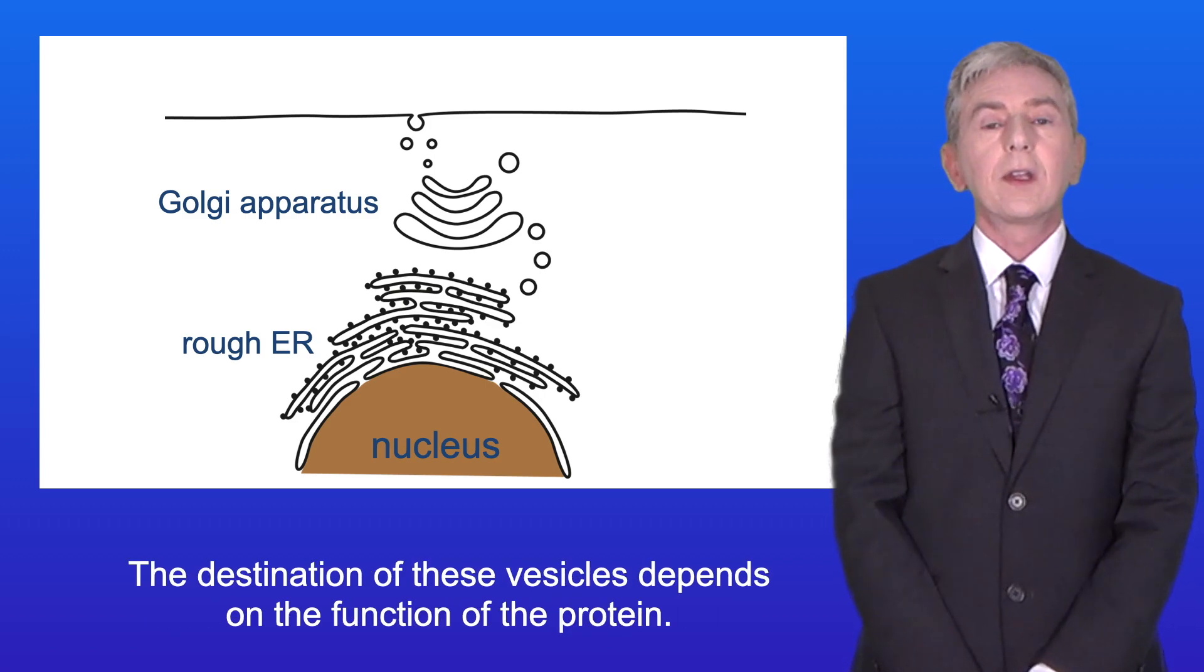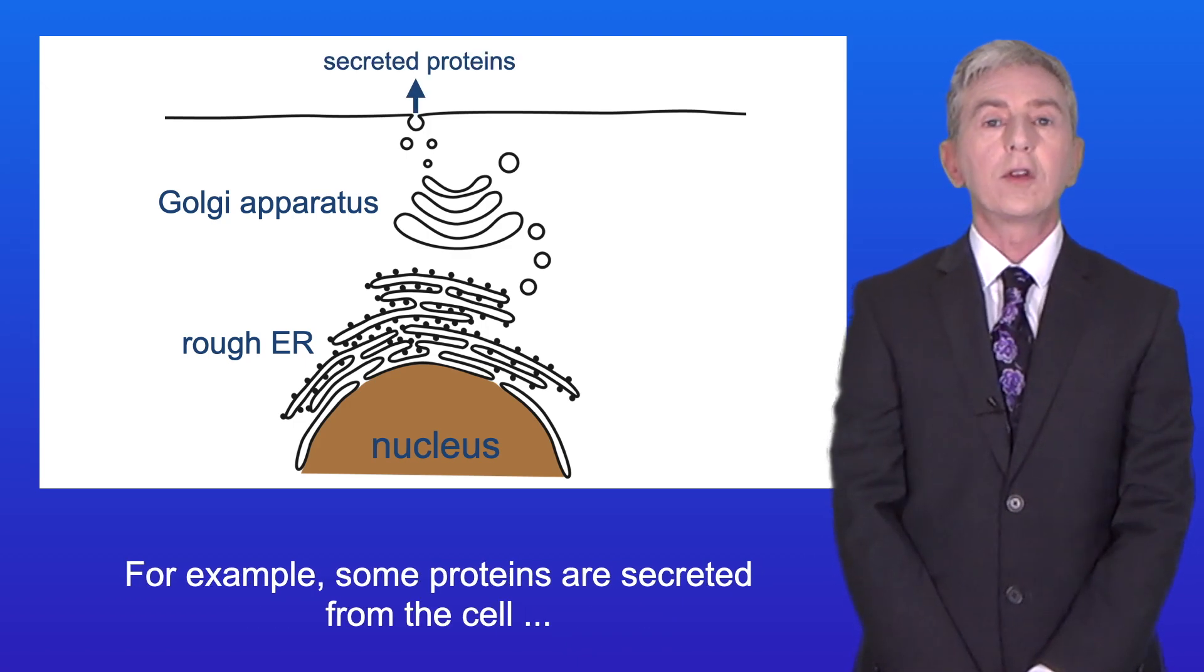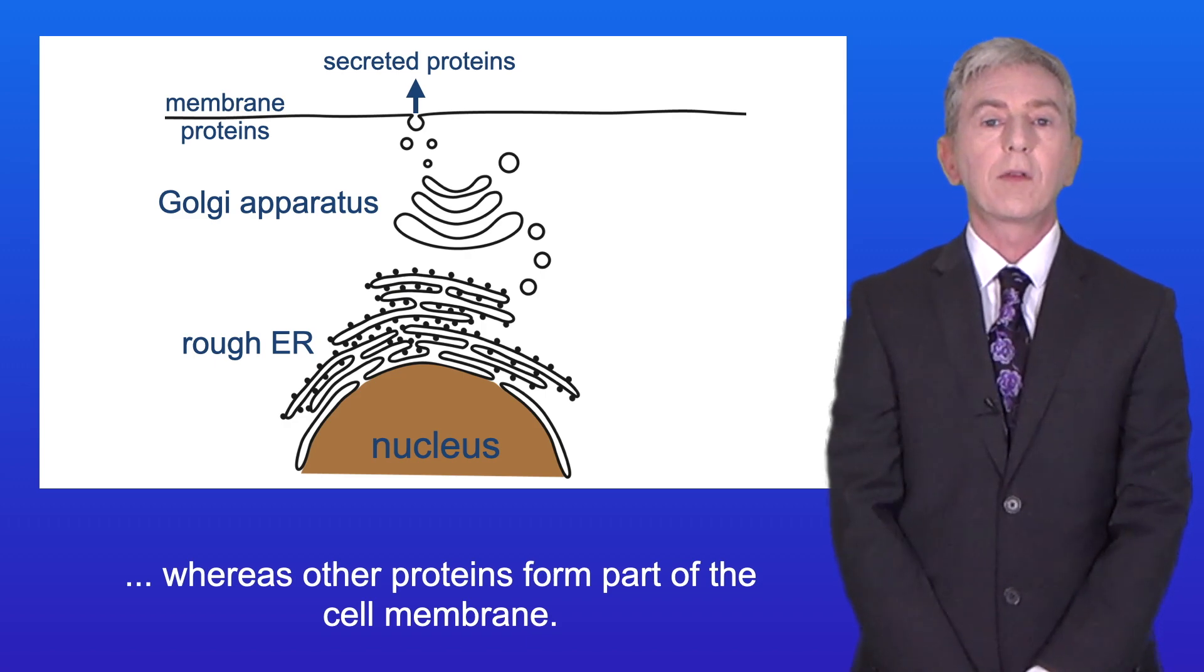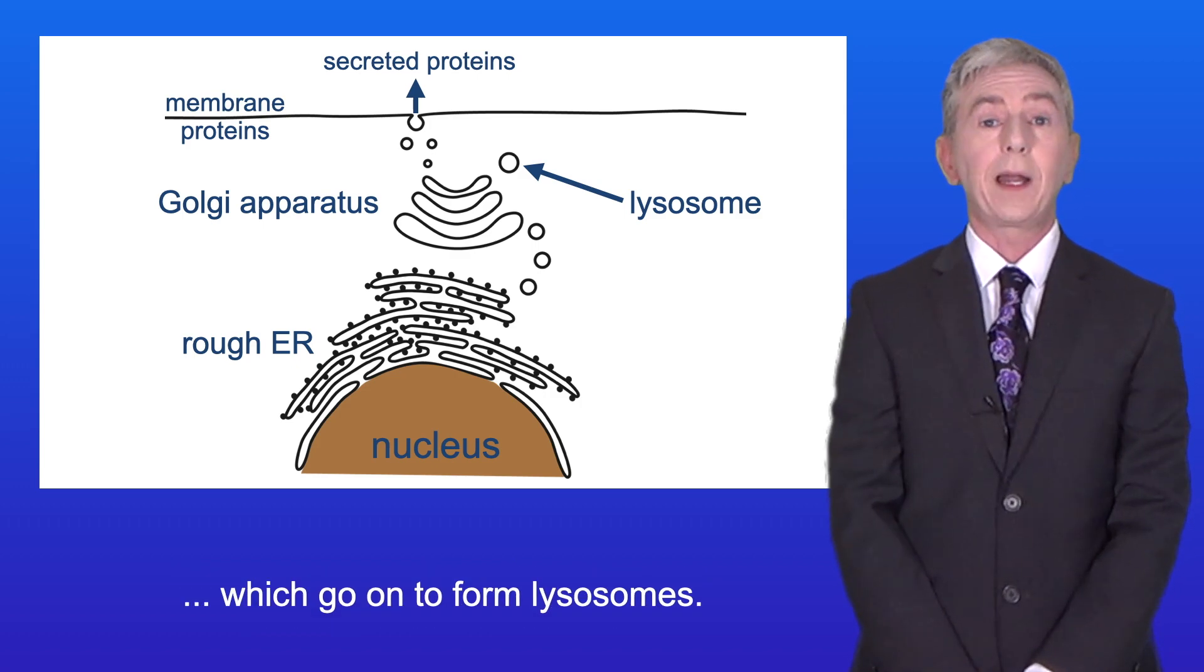Now the destination of these vesicles depends on the function of the protein. For example, some proteins are secreted from the cell whereas other proteins form part of the cell membrane. However, a number of proteins are packaged into vesicles which go on to form lysosomes.